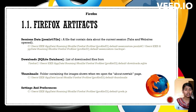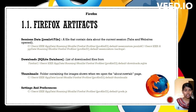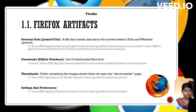Also stored are thumbnails in a folder showing images for the new tab page previews, and settings and preferences kept in a prefs.js file containing user-configured browser settings. These artifacts are vital for forensic analysis to understand user behavior and preferences.